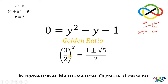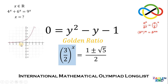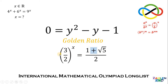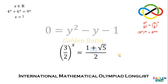We know that y equals 1 plus or minus square root of 5 over 2, and y is just 3 over 2 raised to x. Now, 3 over 2 raised to x is an exponential function, and the range of this function is all real numbers greater than 0. Therefore 3 over 2 raised to x cannot be a negative number. Thus we consider only the positive part: 3 over 2 raised to x must equal 1 plus square root of 5 over 2.